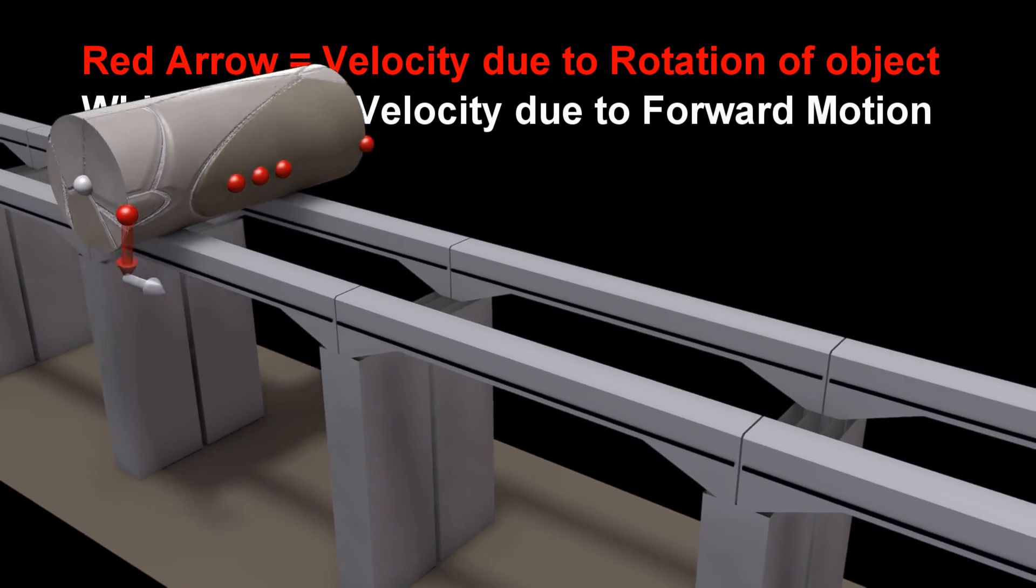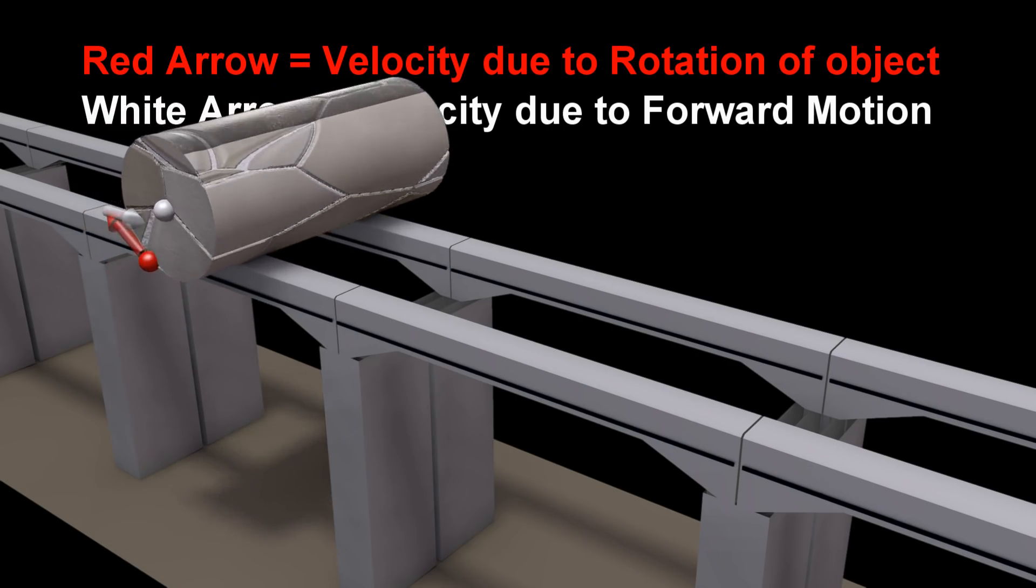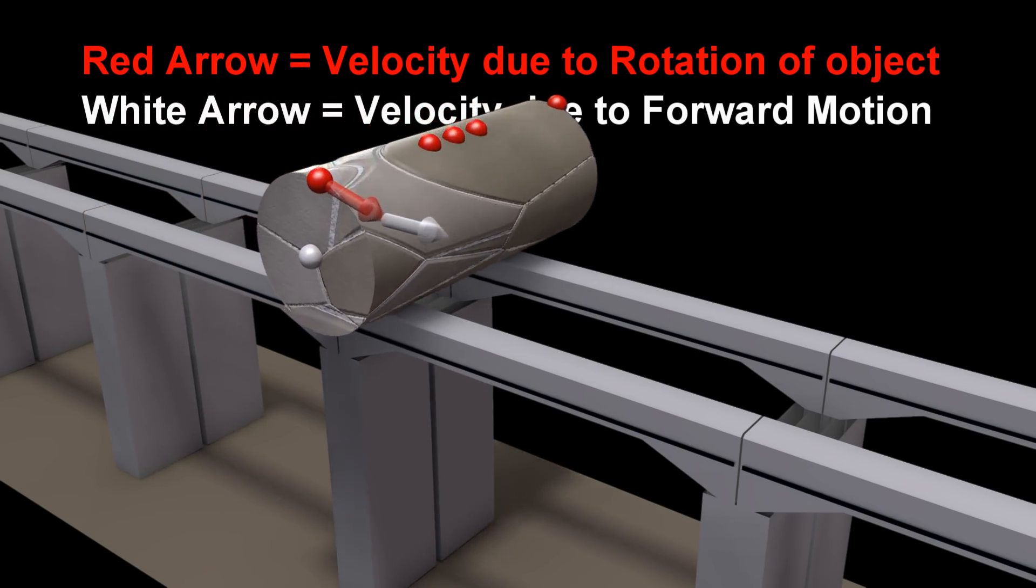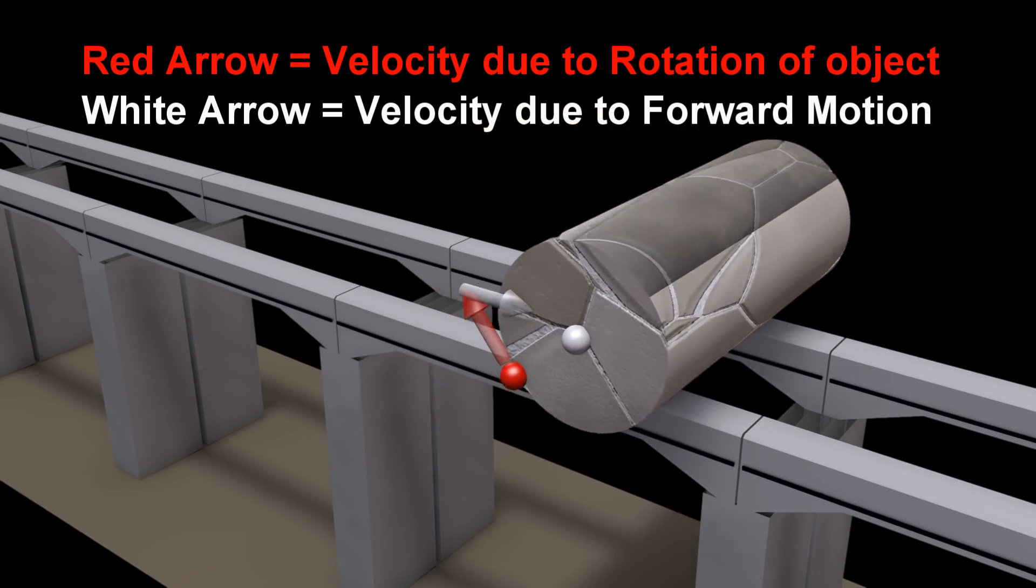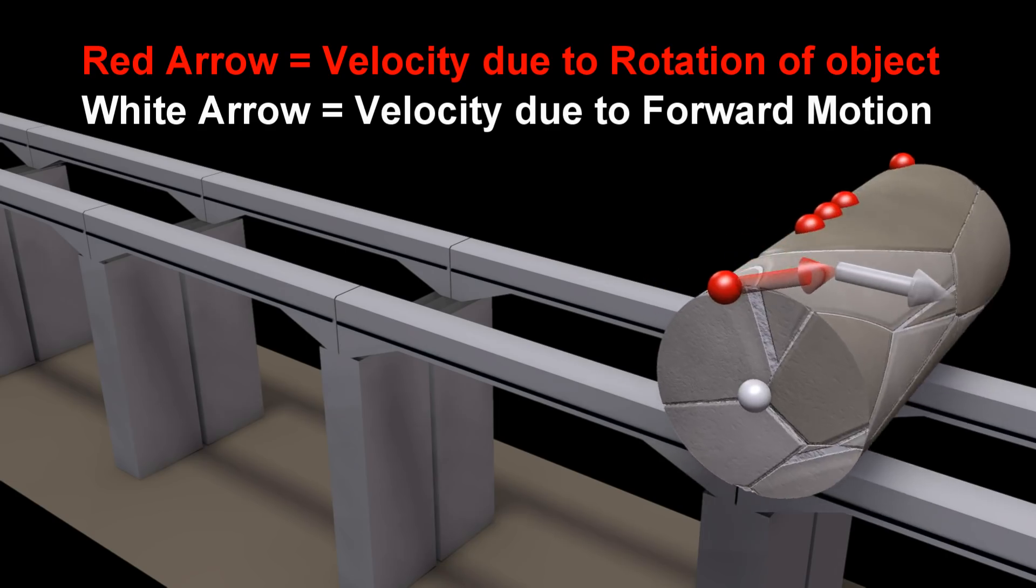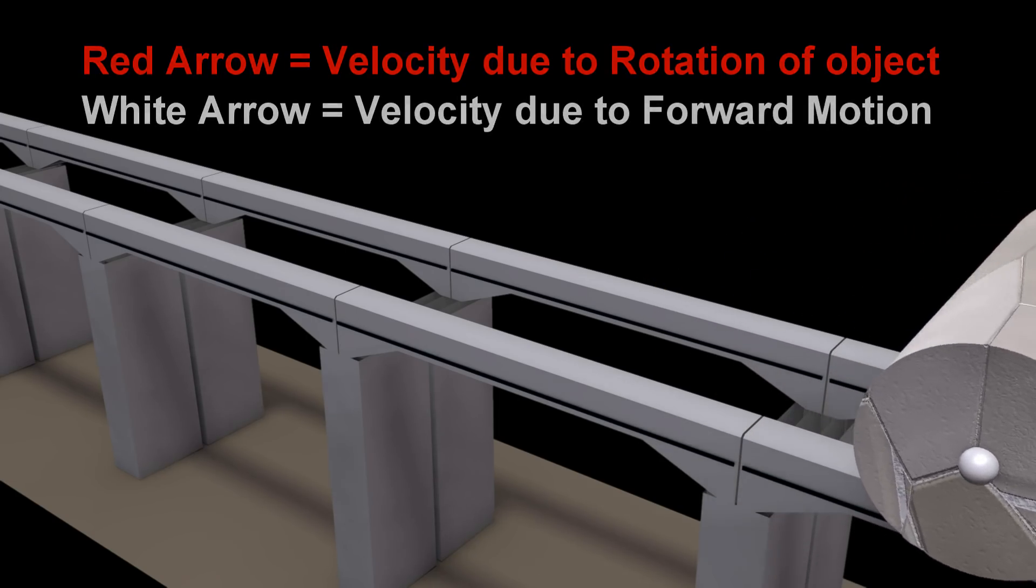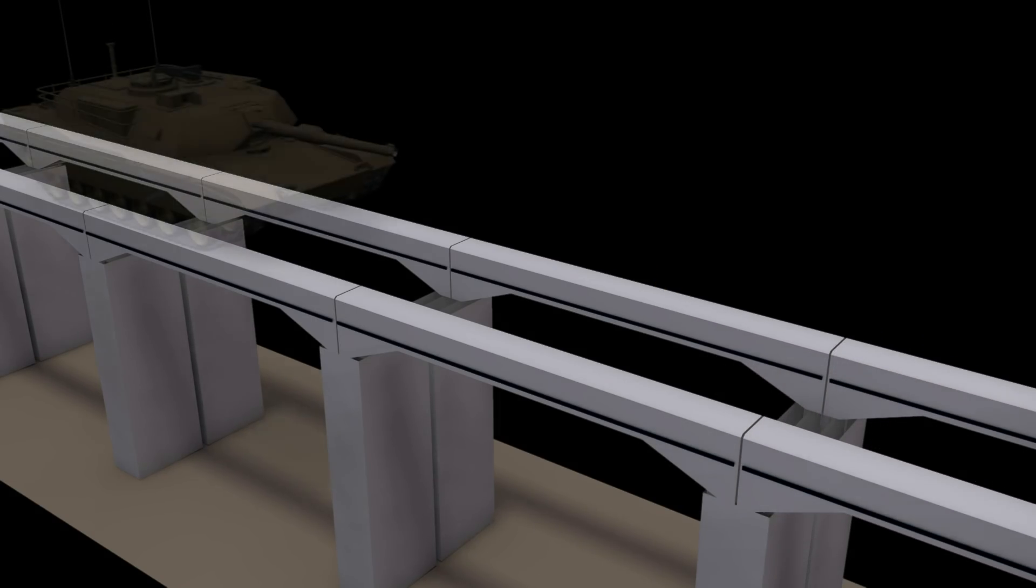These two arrows exactly cancel each other out when the red dot is at the bottom. In order to visualize what is happening, consider the treads of a tank.